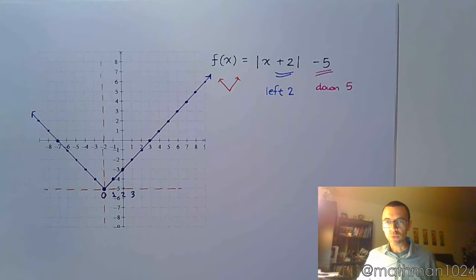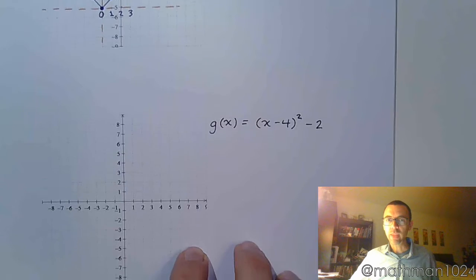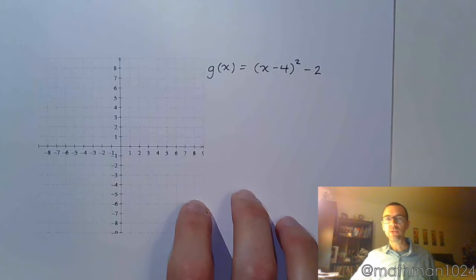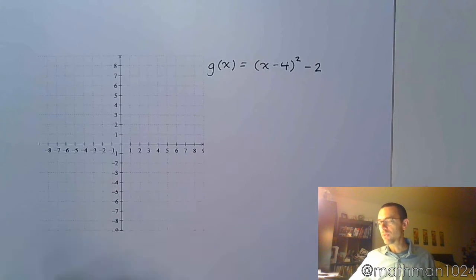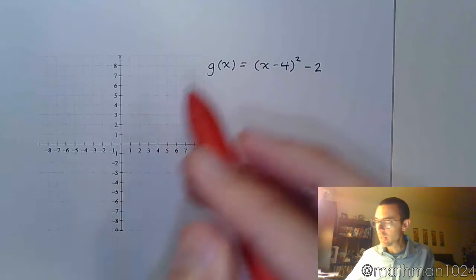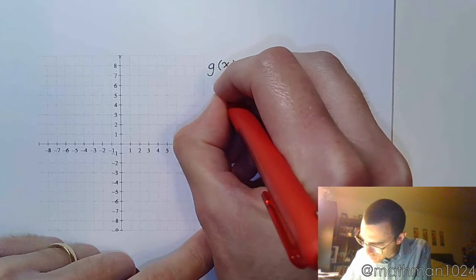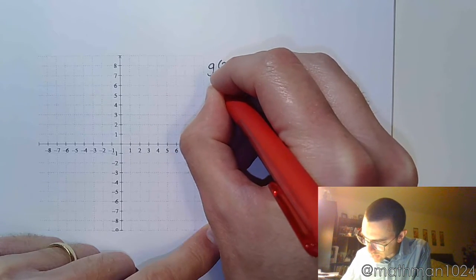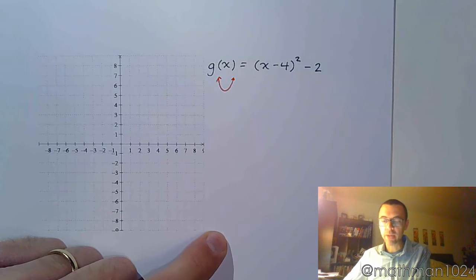All right, let's look at this next one. This next one is g of x equals x minus 4 quantity squared minus 2. First thing to note and to mark down is the shape. Since this is a square, we understand this is going to be the squaring function, which gives us a parabolic shape, like that.